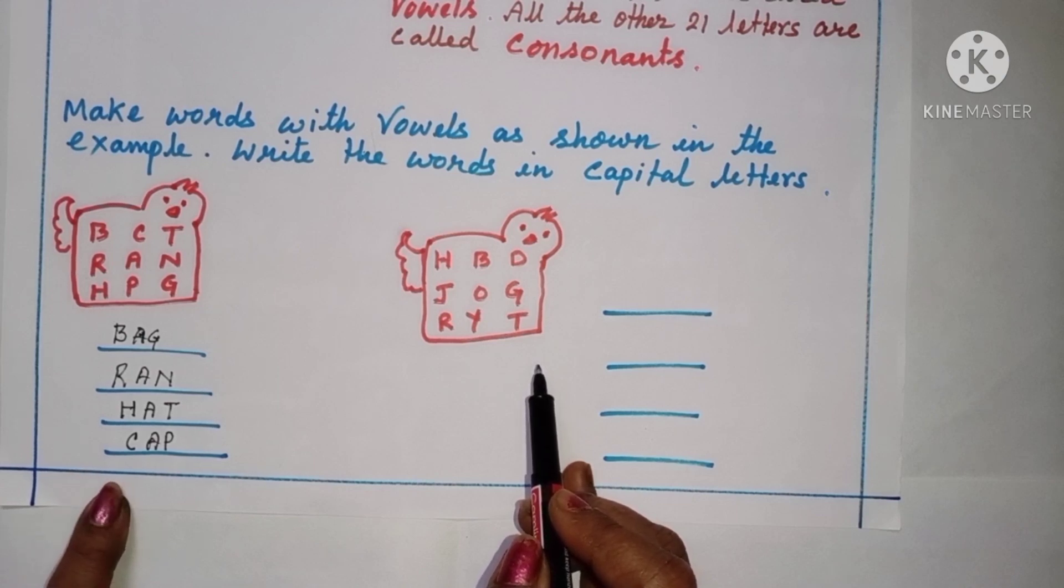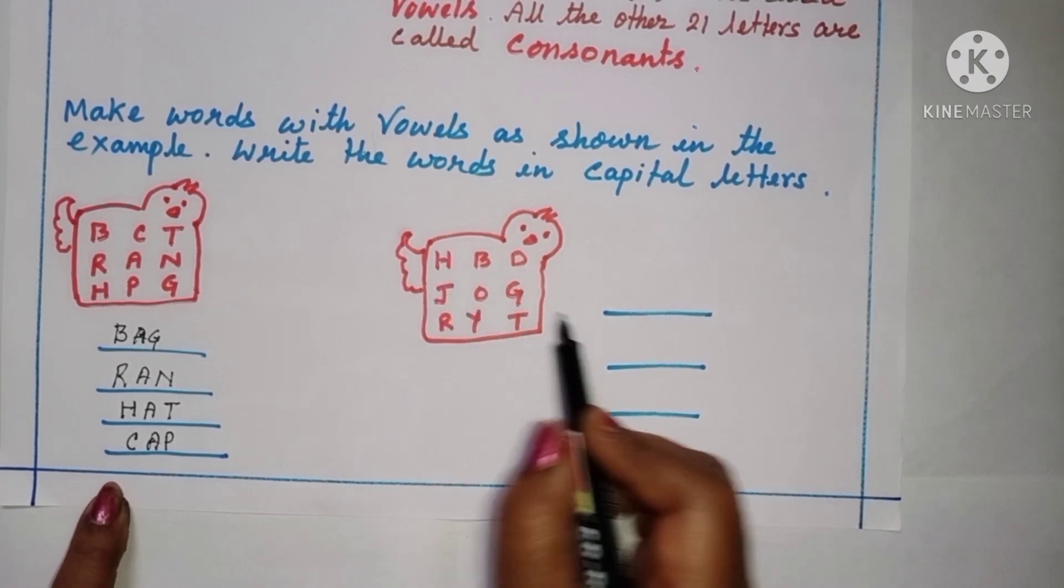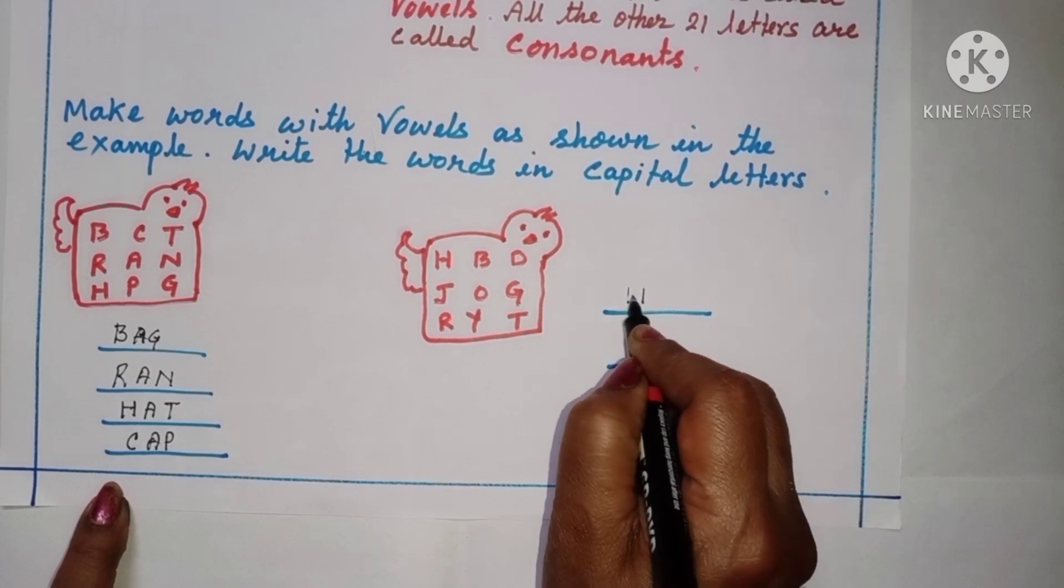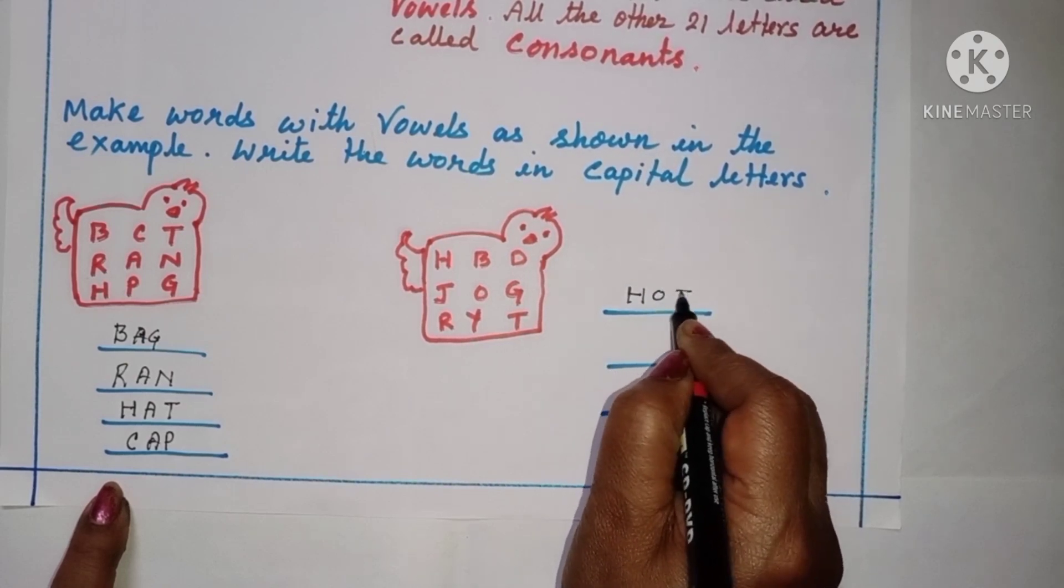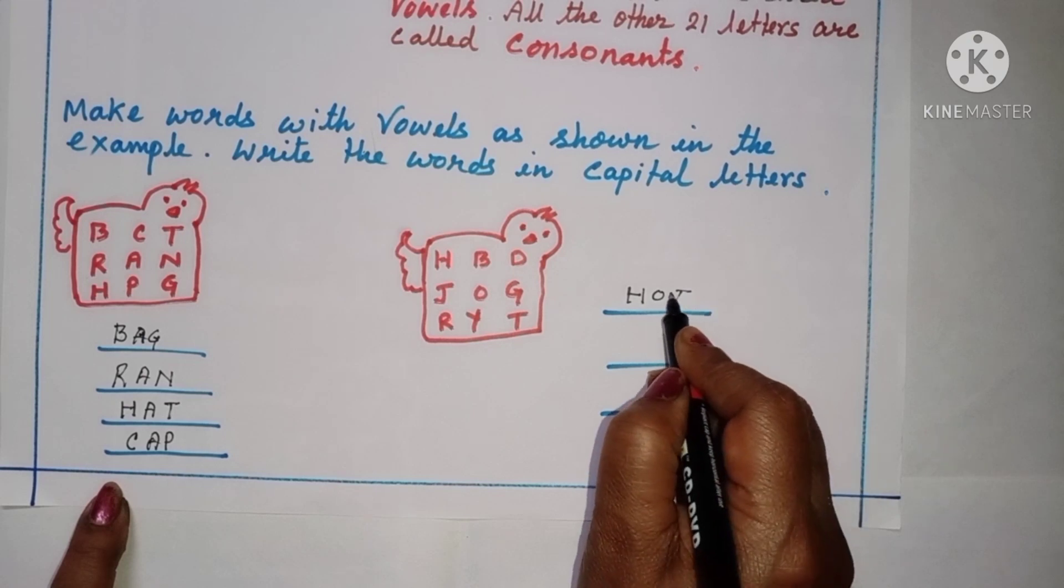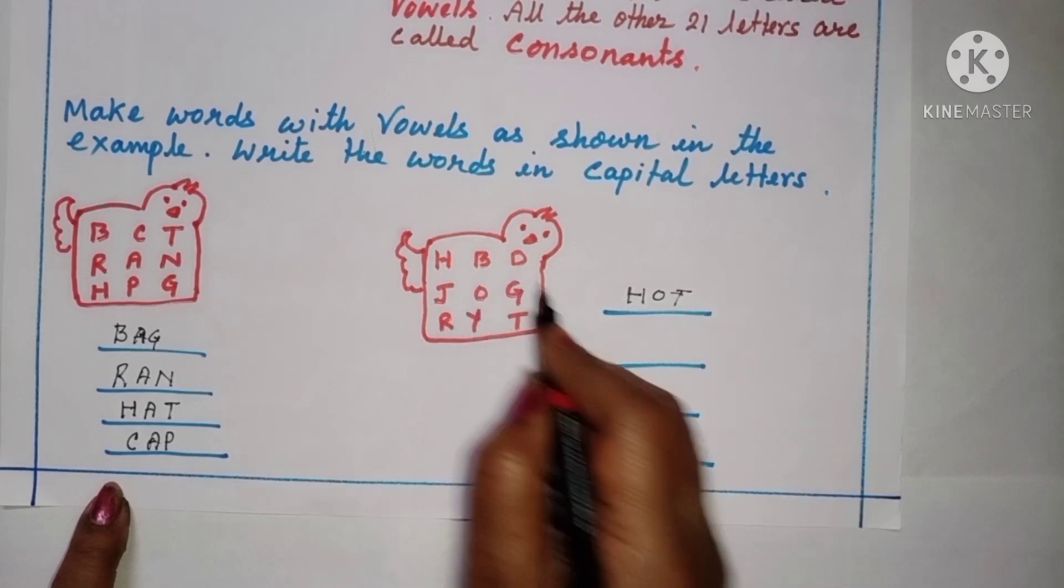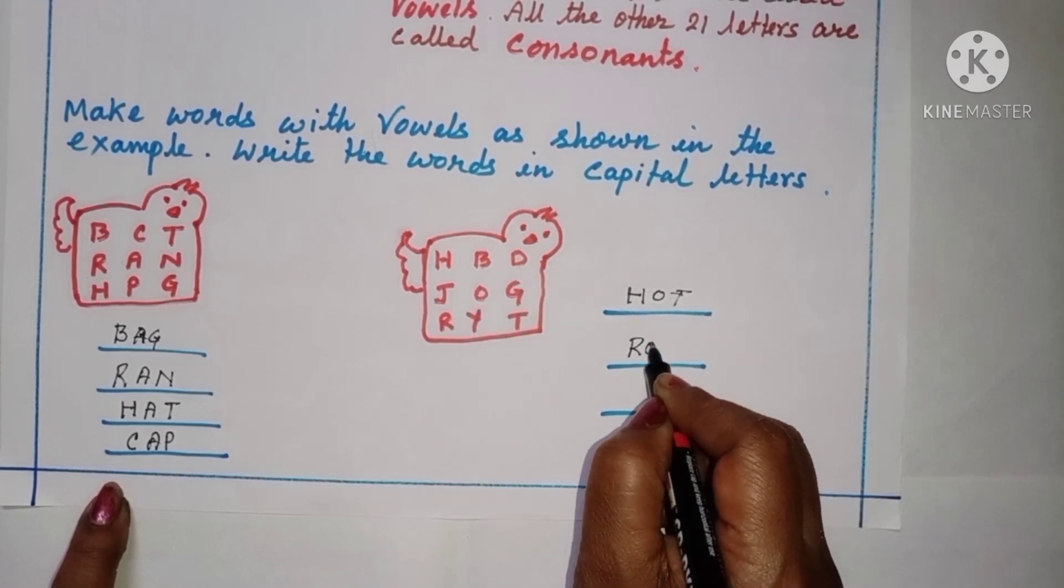Okay, I have to write for you, children. H, O, T, H, O, T. Hot. Now, R, O, D. Rod. R, O, D. Rod.